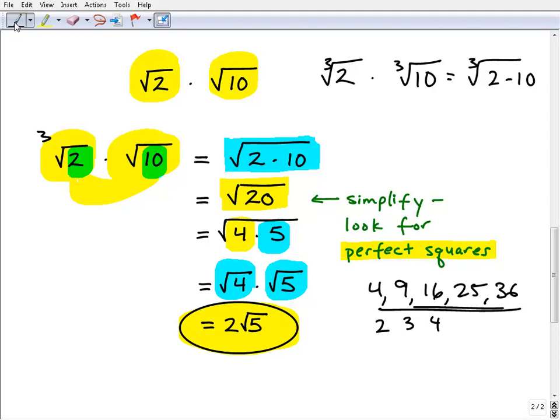And so hopefully, you know, some of you out there might be saying, well, that's a lot of work. You know, why can't I just leave it as the square root of 20, or why can't I just leave it as a decimal?